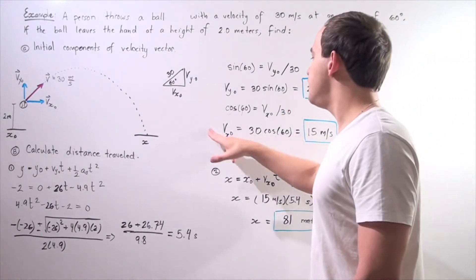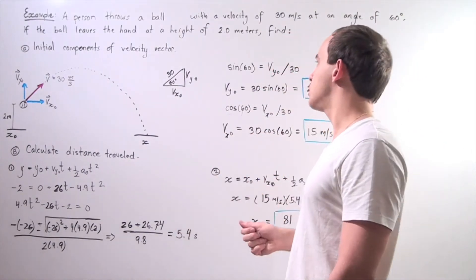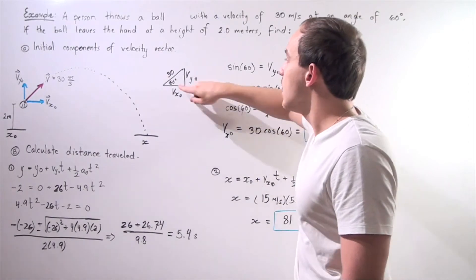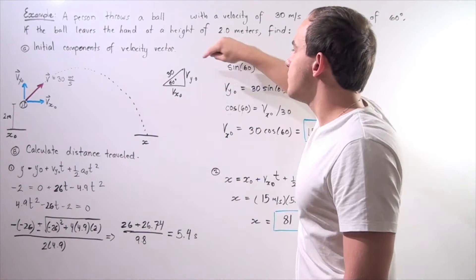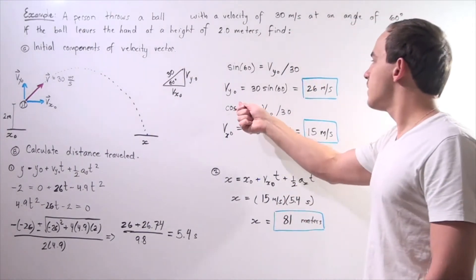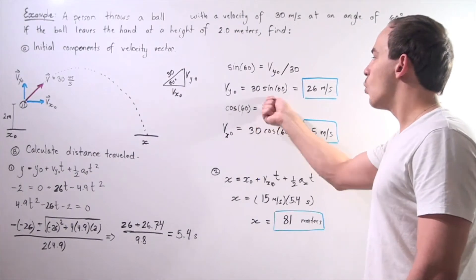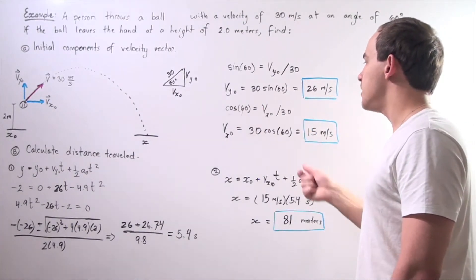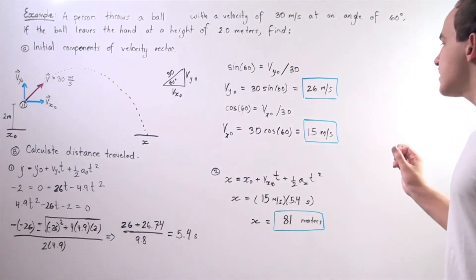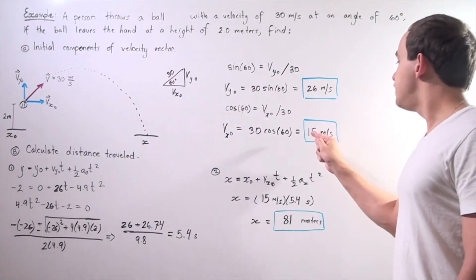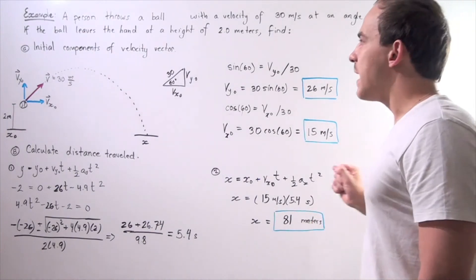For our v-x-naught, we use our cosine. So cosine of 60 is equal to adjacent side, v-x-naught, divided by 30. We bring the 30 over and multiply, and we get exactly 15 meters per second. So now we've found part A — both of our components along the x and y direction.